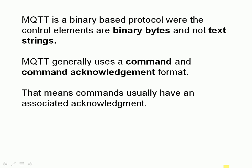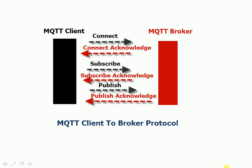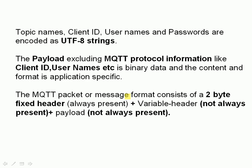Now MQTT is a binary based protocol. The control elements are binary bytes and not text strings as in the HTTP protocol. It generally uses a command and an acknowledge structure, so you send the command and you get an acknowledgement, but that's not true for all of the commands. For instance, the publish quality of service zero is not actually acknowledged by the server. This is a little diagram showing that process: you get a connect and a connect acknowledge, a subscribe and subscriber acknowledge, and a publish and a publish acknowledge, except if you're using quality of service zero and it's not acknowledged.